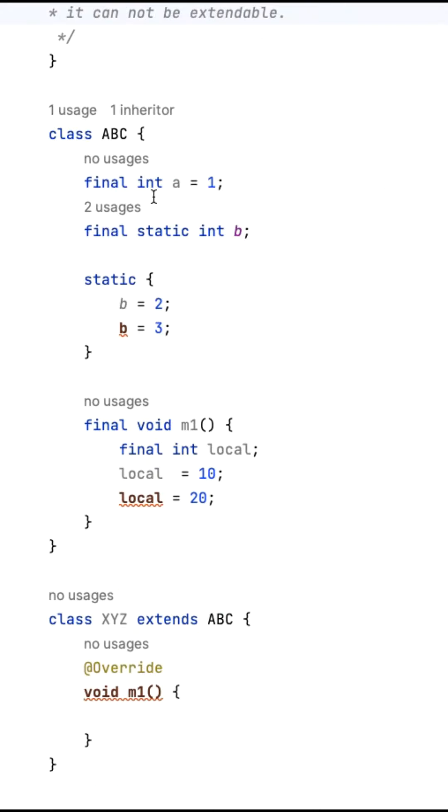Let's take an example. Here is a normal class ABC. I created a final int a and assigned it with one. If you try to assign any other value to a again, it will give a compilation error.